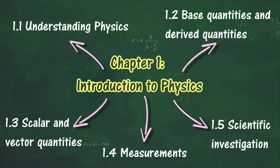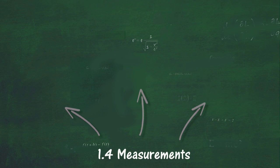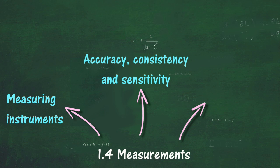In section 1.4, we will learn about the way to make accurate measurements. At the end of this section, you should be able to measure physical quantities using appropriate instruments, explain the meaning of accuracy, consistency, and sensitivity, explain types of experimental errors, and use appropriate techniques to reduce errors.